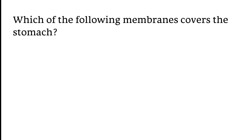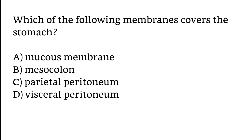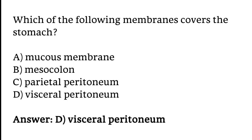Which of the following membranes covers the stomach? Options: A) mucous membrane, B) mesocolon, C) parietal peritoneum, D) visceral peritoneum. The correct answer is option D. The visceral peritoneum membrane covers the stomach.